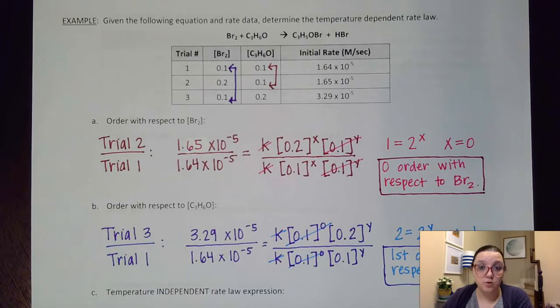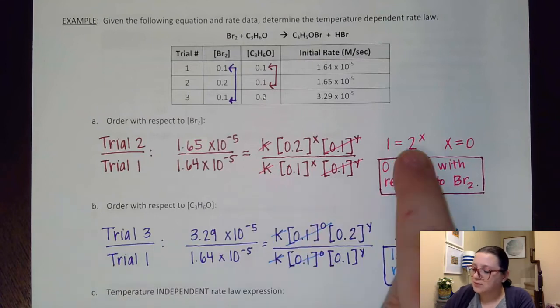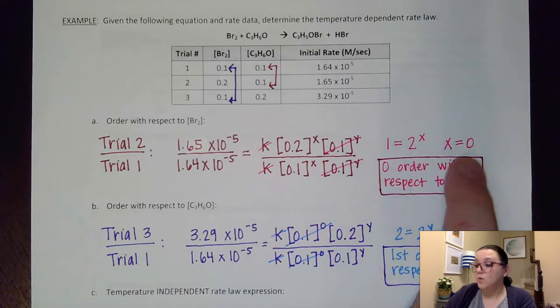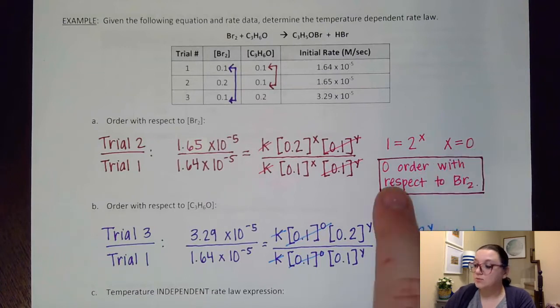As a reminder, x, those orders are always going to be either 0, 1, 2, 3, or 4 when you're doing these types of problems. Here, because a number raised to the exponent ended up equaling 1, what that means is that my order was actually 0. This was 0 order with respect to Br2.